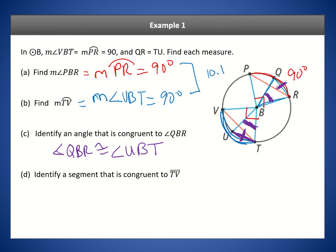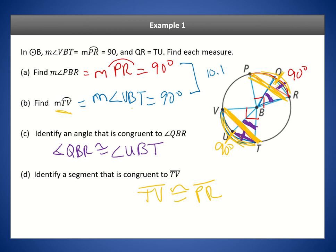Now identify a segment congruent to TV. Arc TV is 90 degrees, and arc PR is also 90 degrees, so these arcs are congruent. By Theorem 10-4 or its converse, if arcs are congruent their corresponding chords must be congruent, so TV is congruent to PR.